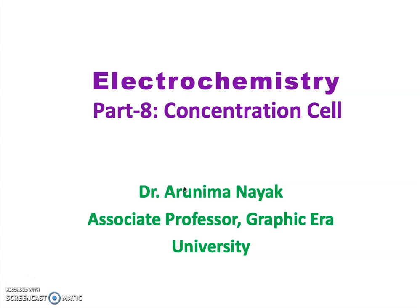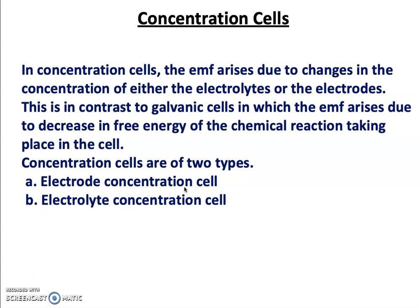Concentration cells fall under electrochemistry. Just like any cell, a concentration cell consists of an anode and a cathode placed in different containers. The anode is where oxidation takes place and the cathode is where reduction takes place. There is a flow of electrons, so current flows in the opposite direction when the electrodes are connected via a metallic wire or conducting material. The EMF — that is the electromotive force, or maximum potential difference — results due to changes in the concentration of either the electrolyte or the electrodes.